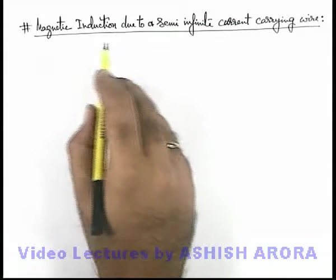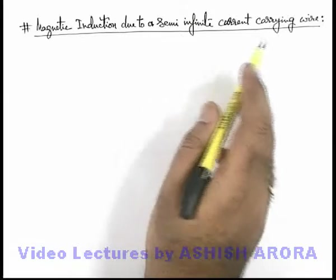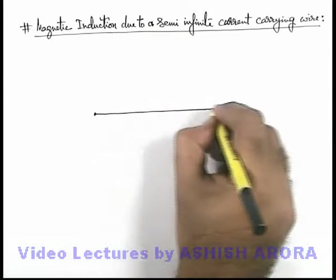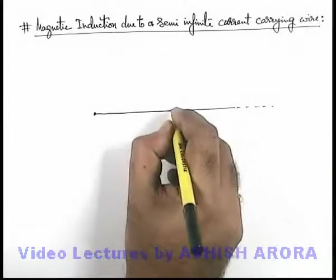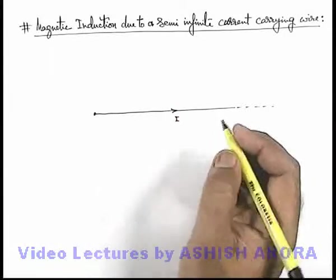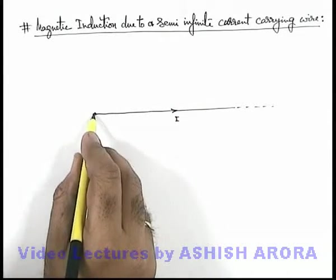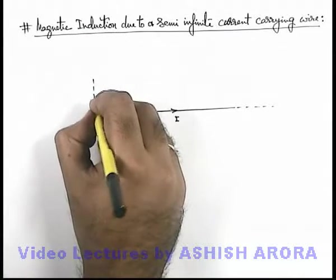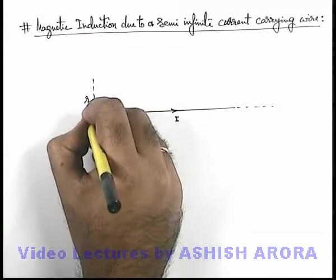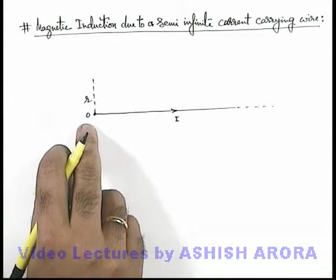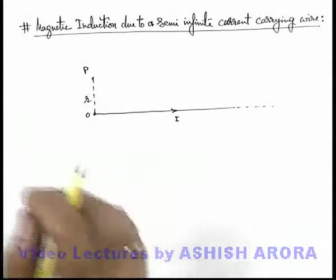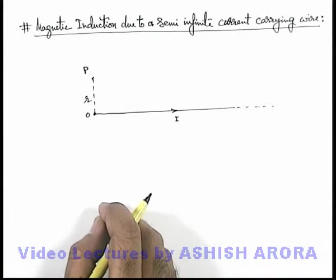Let us study the magnetic induction due to a semi-infinite current carrying wire. If we are given a wire which is extended to infinity and carrying a current I, whose one end is finite and the other is going to infinity, and due to this wire at a distance r from the one end of this wire O, if there exists a point P, we are required to find the magnetic induction at point P.